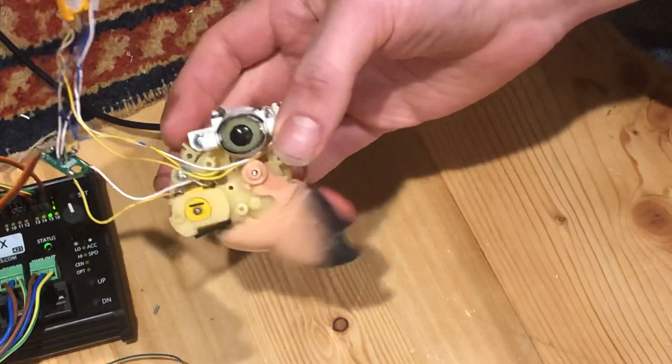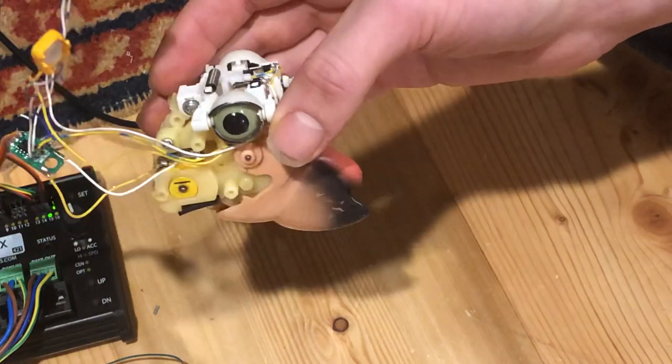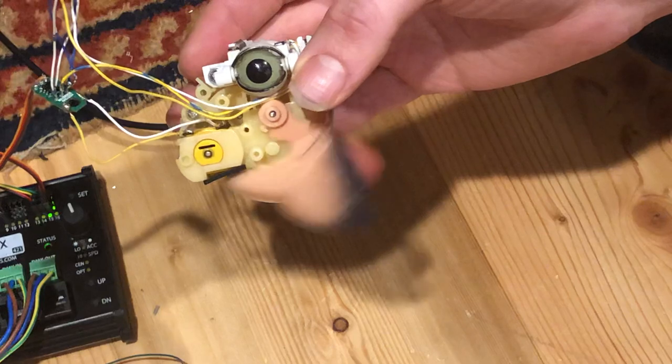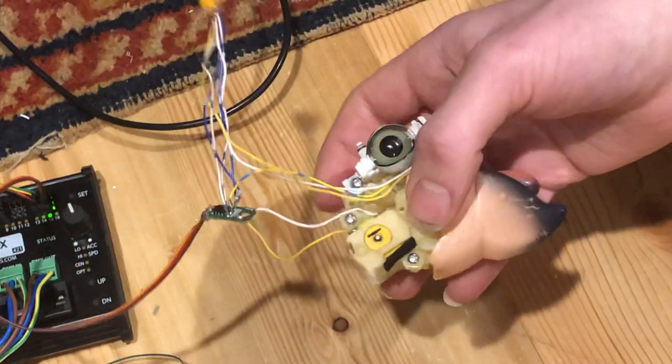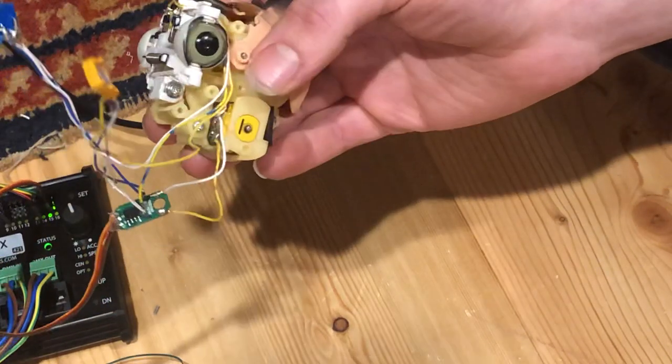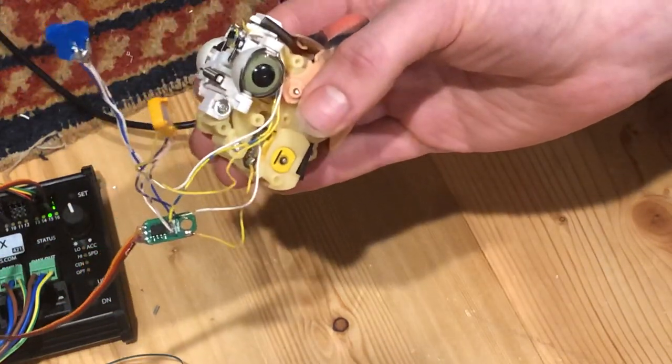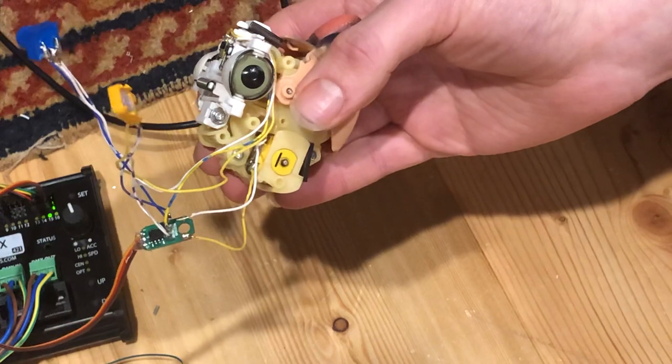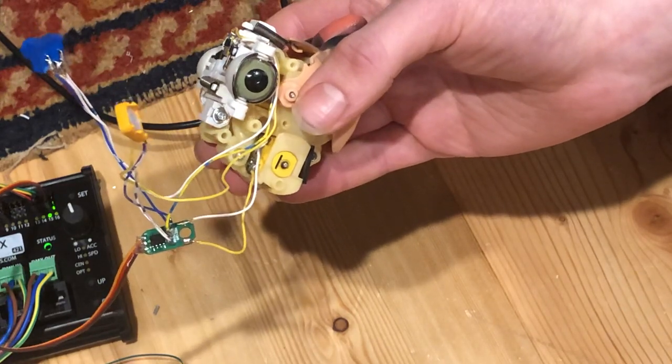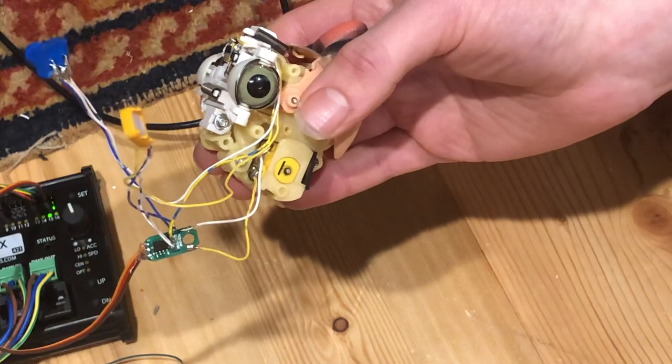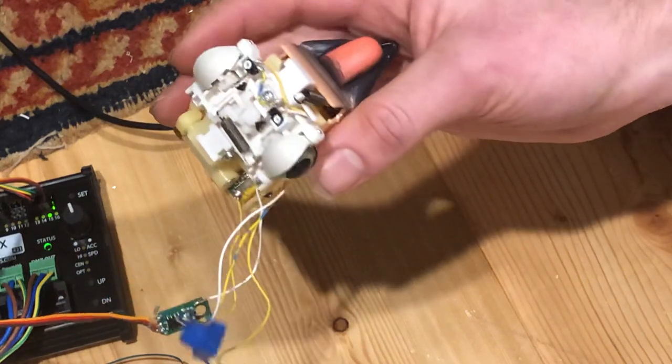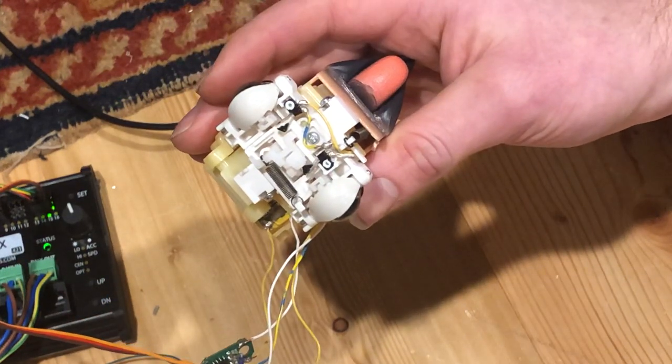So when I'm sending it a signal for low, it's operating the motor telling it to go low to operate the mouth. Then when you're wanting it to go high to do the eyes, anything higher than 128 will trigger the eye blink.